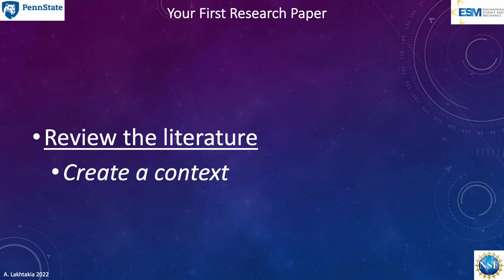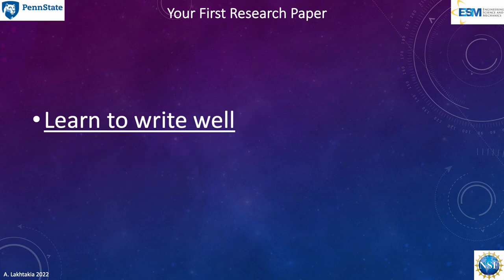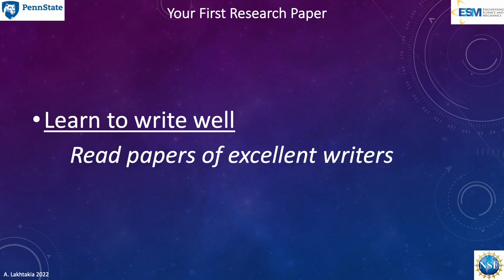Let's get back to the task at hand — writing your first research paper. Review the literature relevant to your research; spend at least a week doing that. You have to create a context for your research accomplishment. Context is not created simply by citing many papers. Instead, tell your peers a story leading to your work and cite the papers that appear in that story. Read papers written by excellent authors in your discipline and related disciplines. One learns to write well from those who are experts at writing well. Emulate them.